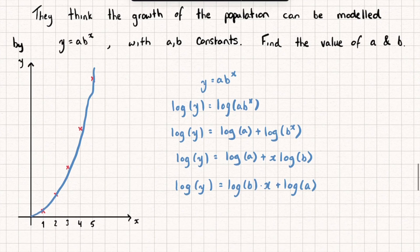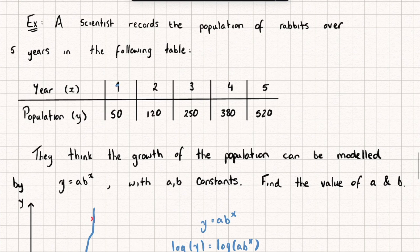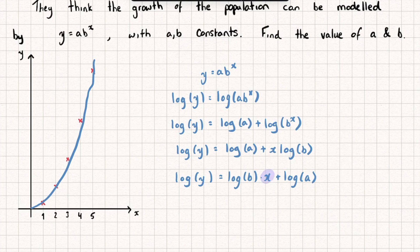This equation is actually in the form of a straight line. We substitute in different values of x and get an output of log y — call that capital Y. Log b is just a fixed number in front of x, so call that m. And log a is just another fixed number we're adding on, so call that c. This gives us Y = mx + c — the equation of a straight line.